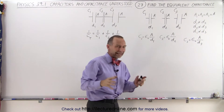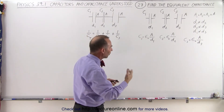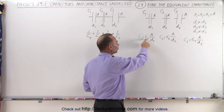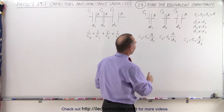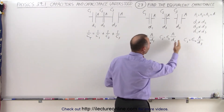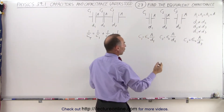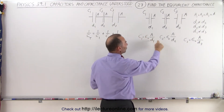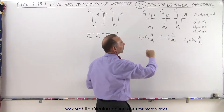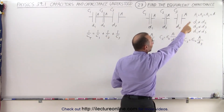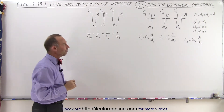None of them have a dielectric, so we just use the dielectric constant equal to 1, or we just use epsilon sub-naught, which is the permittivity of free space. Here is how we can express the capacitance of each of the three capacitors. The only difference between them is that each has a different distance between the plates. Notice all the areas are the same, but all the separation distances are different.